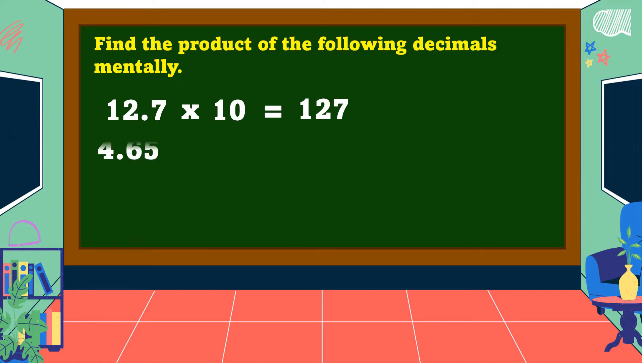Another one: four and sixty-five-hundredths times one-hundred. The answer is equal to four-hundred-sixty-five.